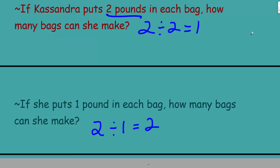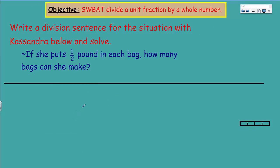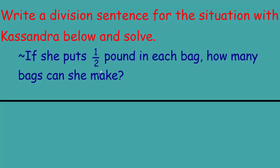Now let's really up the ante. We've been writing division sentences for the Cassandra situation, but now it's changed yet again. What if she puts a half pound in each bag — how many bags can she make? What would that division sentence look like? We have two pounds as our dividend, dividing by one half. Do you think the answer will be more or less than two?